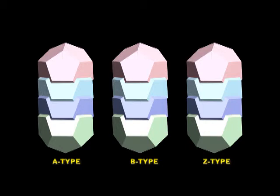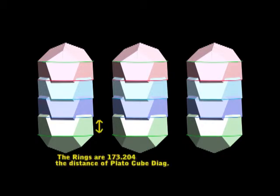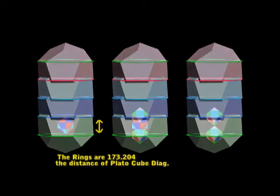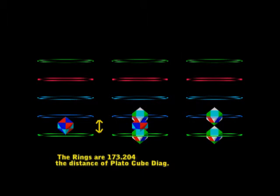So now we'll add some rings for the vertices of the dodeca. These rings are spaced 173.204 apart. This is the long diagonal of little Plato cube and Bucky cubes of the system.